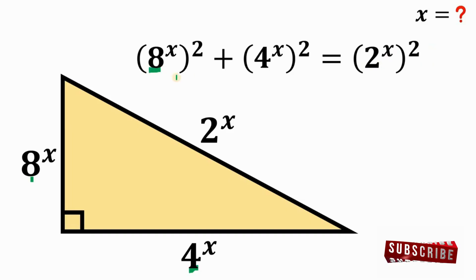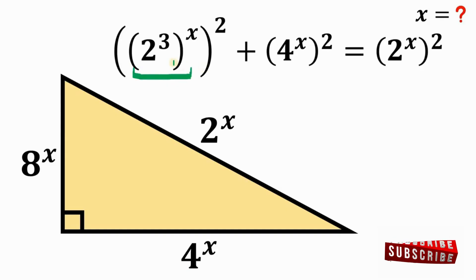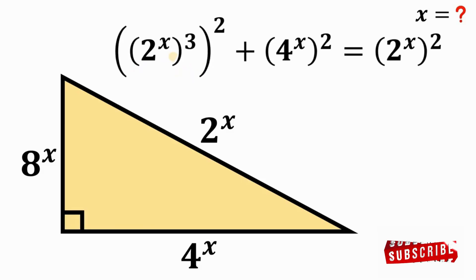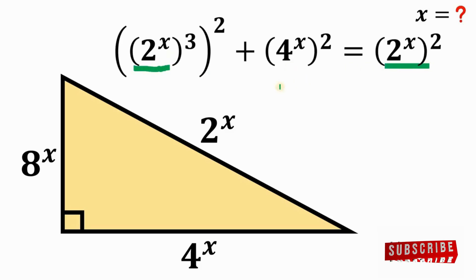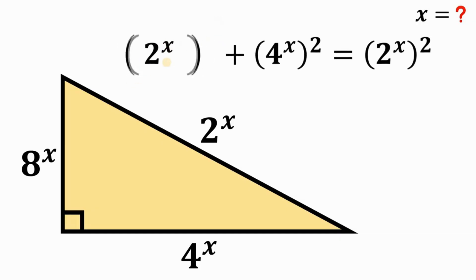Now, 8 can be rewritten as 2 raised to the power of 3, because 2 times 2 times 2 equals 8. And 2 raised to the power of 3, raised to the power of x, can be rewritten as 2 raised to the power of x, raised to the power of 3, because we now have a common term of 2 raised to the power of x. Using the laws of exponents, 2 raised to the power of x, raised to the power of 3, raised to the power of 2 — we multiply 3 and 2 — giving us 2 raised to the power of x, raised to the power of 6.